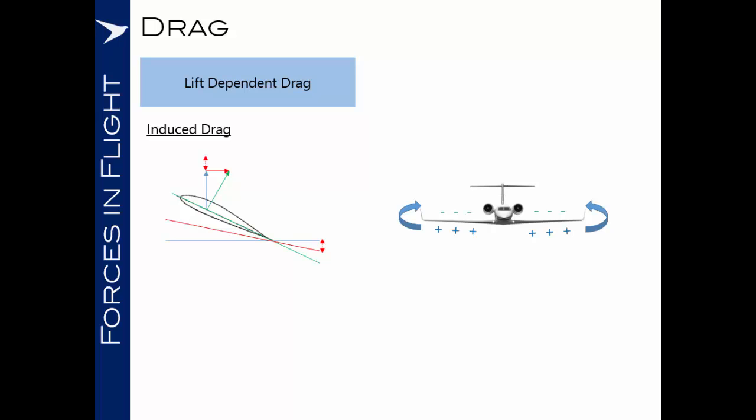Now the other component of the lift dependent drag we said was the increment of zero lift drag. This we can explain quite simply by looking at the following diagram. If you consider the frontal area of an airplane in a normal cruising configuration it will take up a certain frontal area of air which will need to be pushed out of the way. As we increase the angle of attack, as we increase the lift being generated by the wings, that frontal area will increase by the fact that we are now presenting more of the form of the airplane into the airflow.